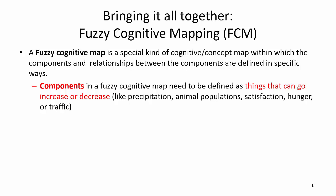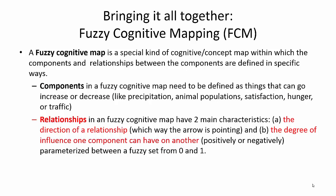There are really two different types of attributes of a fuzzy cognitive map. One is the components, which can be thought of as stocks — something that can increase or decrease. We also have the relationships between these stocks, which can be defined in two ways: the direction of the relationship — which way the arrow is pointing from one concept to another — and the degree of influence one component can have on another, which can be positive or negative.